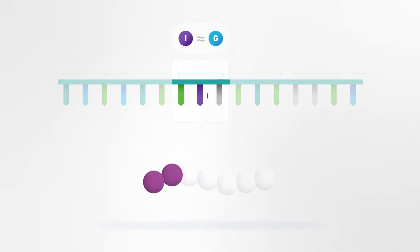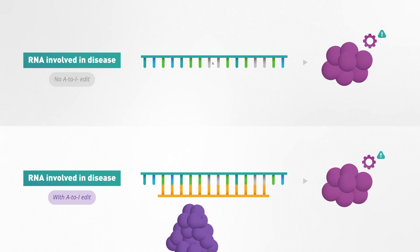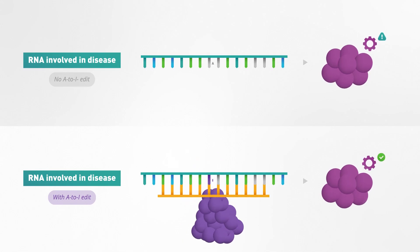Because inosine has a very similar structure to guanosine, the I will then be read as a G when the RNA is used as a blueprint for making a protein. This is how Axiomer leverages the natural RNA editing capabilities of ADAR enzymes to modify protein functions.